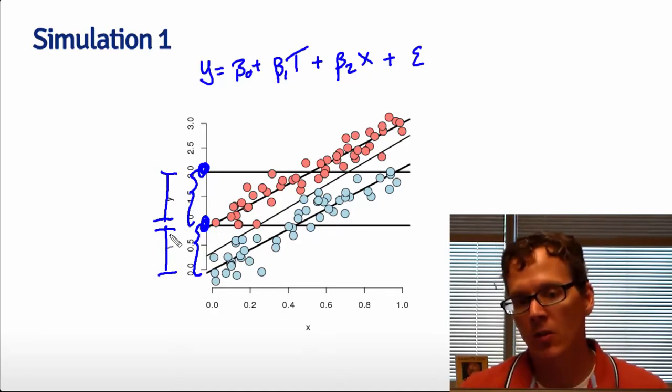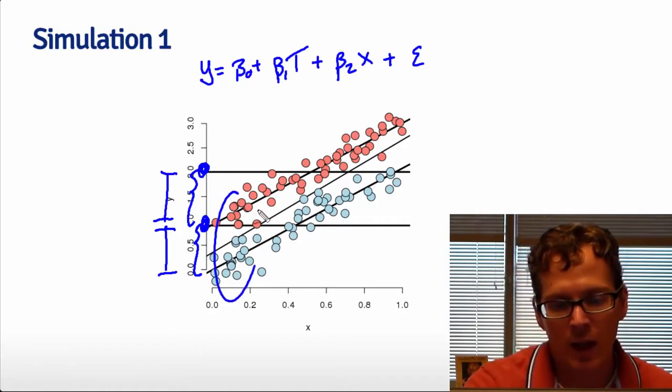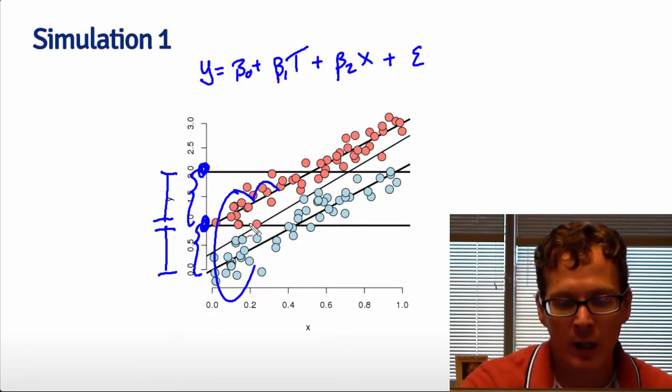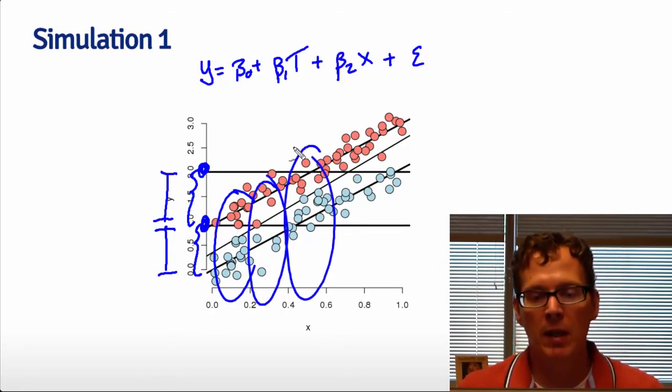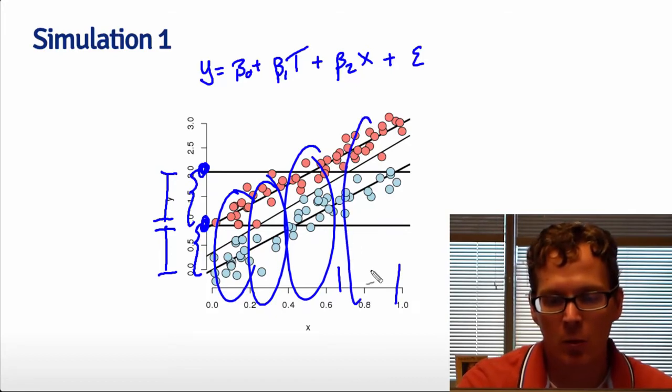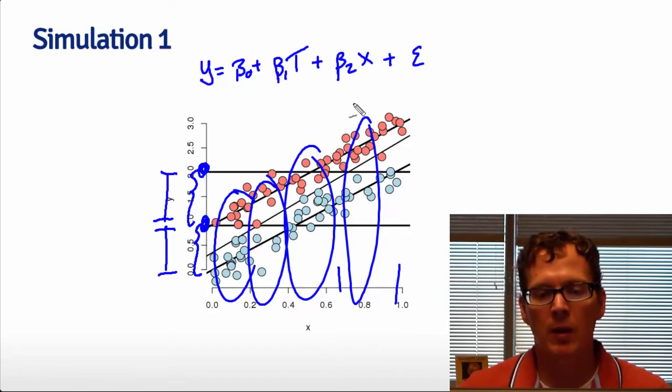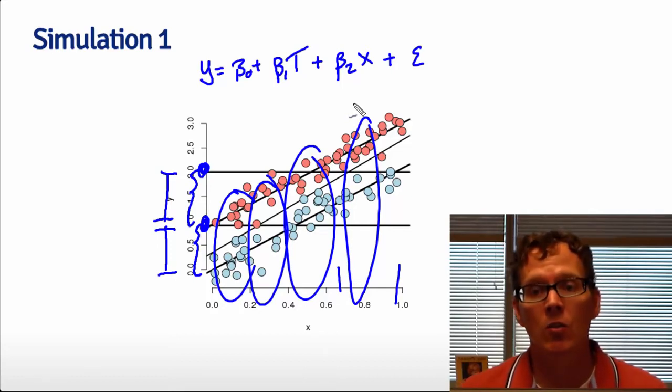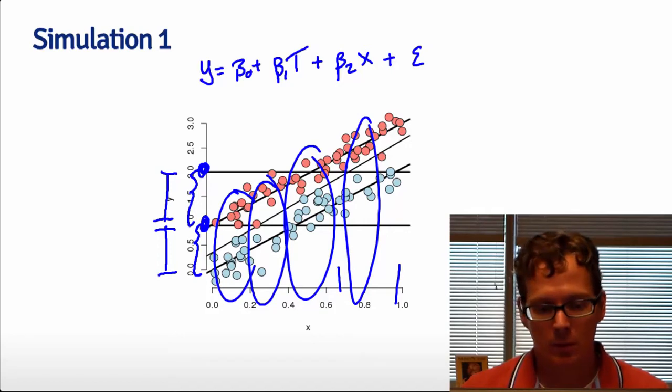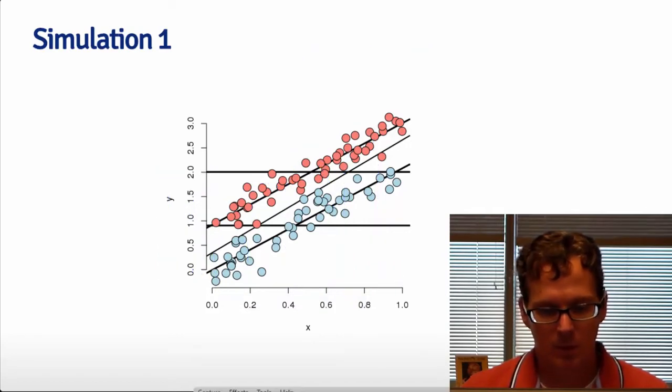Another thing I would note in this example is that there's a lot of direct evidence to compare our groups for any given value of X. If we were to bin X in a bin like this, we would have a lot of red and blue circles to do a direct comparison of the treatment for a fairly isolated level of X. So this would be a good experiment. This would be something that might happen if we were to randomize treatment.